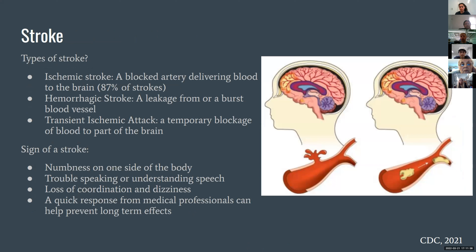Stroke was mentioned earlier in relation to how plaques can break off. There are a few different types of strokes. Ischemic stroke is the most common — about 87% of strokes — and occurs when a plaque breaks off, travels to a vessel in the brain, gets lodged, and prevents blood flow to that part of the brain, causing it to die. Hemorrhagic stroke occurs when part of a blood vessel bursts, possibly due to blood pressure. A transient ischemic attack is when something gets lodged but eventually dislodges itself after a period of time.